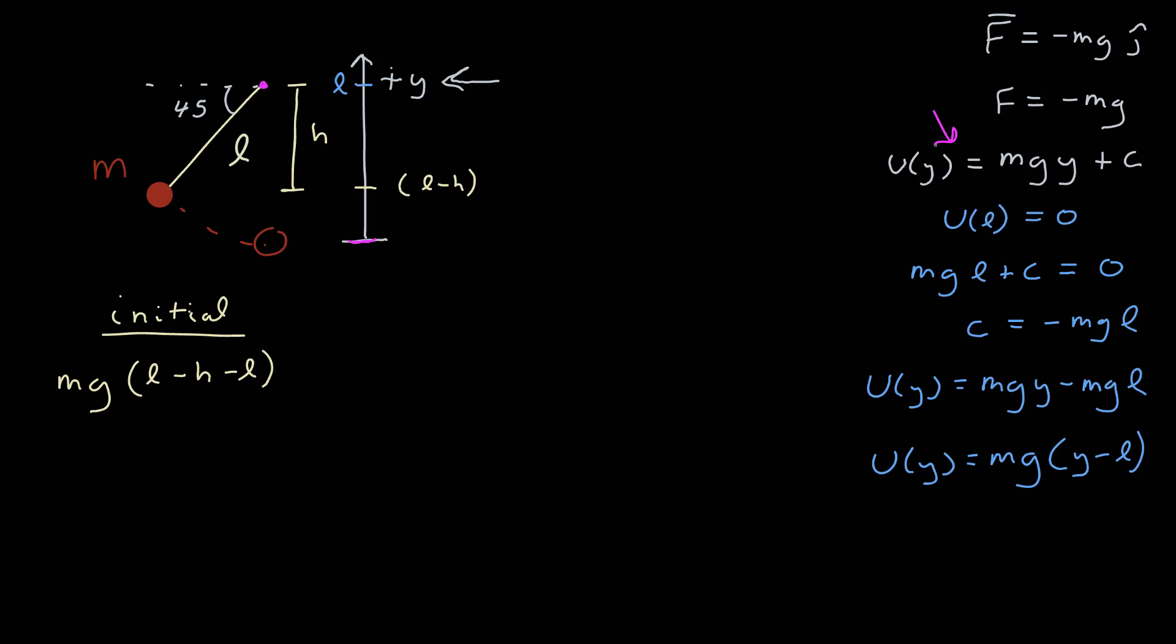Now we're ready to set up our initial and final energies. Initially, it's at rest, so it has no kinetic energy. It has some potential energy because it's this distance above the zero. So what is that distance? Before, I identified h as the distance it was from the pivot point. Well, if the pivot point is a distance l away, that means this distance here is an amount l minus h. So my initial potential energy is mg times the y coordinate, which is l minus h, minus l. Now to the final energy. Well, it has some kinetic energy, 1 half mv squared, and it also has some potential energy. When it's at the very bottom, the y coordinate is zero, so I substitute zero in for that. Now I set them equal,